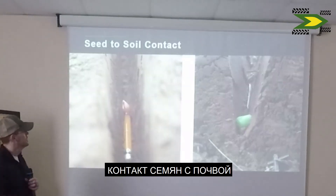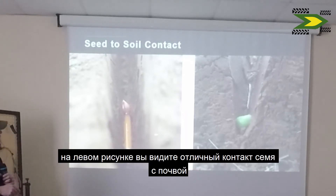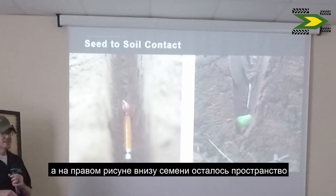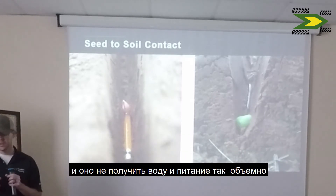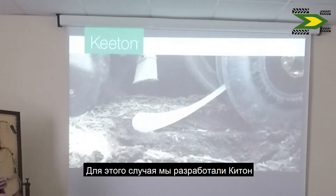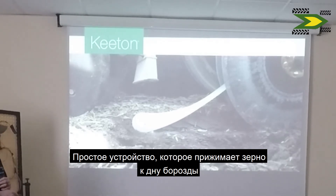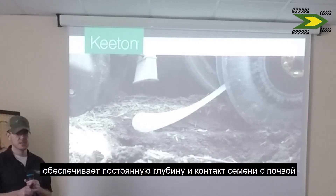Seed-to-soil contact is critical. You can see here that these seeds are not pushed all the way down into the trench — there's an air gap underneath them. That seedling may not bring in water as consistently as one that has good seed-to-soil contact. Our solution for this is called the Keaton seed firmer — a simple device that runs in the furrow, pressing each seed down into the bottom of the furrow, giving consistent depth and good seed-to-soil contact.